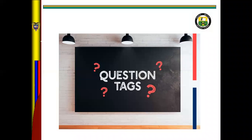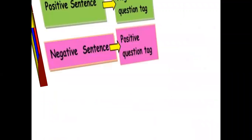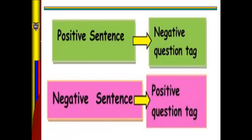Hello guys, good morning, welcome to English class. I'm going to talk about question tags. A question tag is a small question at the end of a statement. Question tags are used when asking for agreement or confirmation. If you have a sentence in affirmative, the question tag is in negative, or if you have the sentence in negative, the question tag is in affirmative.